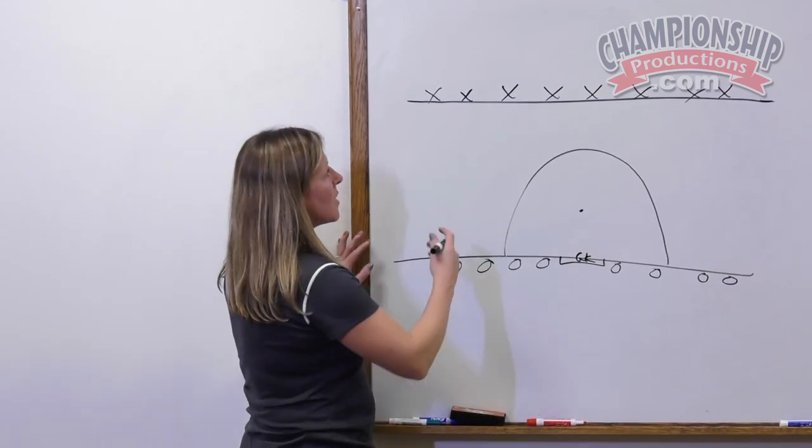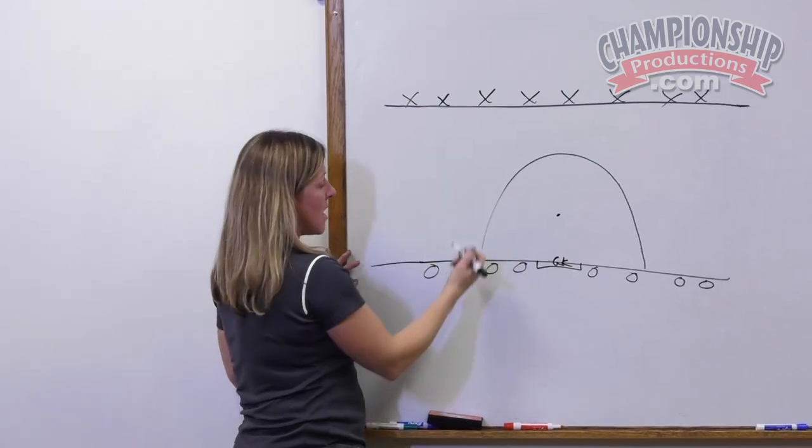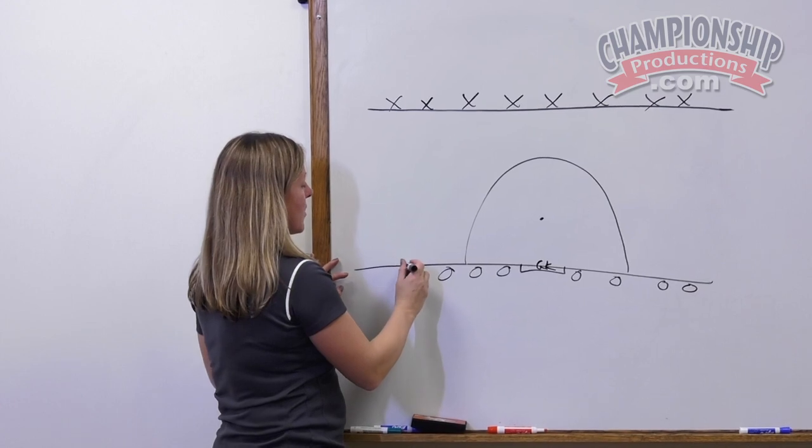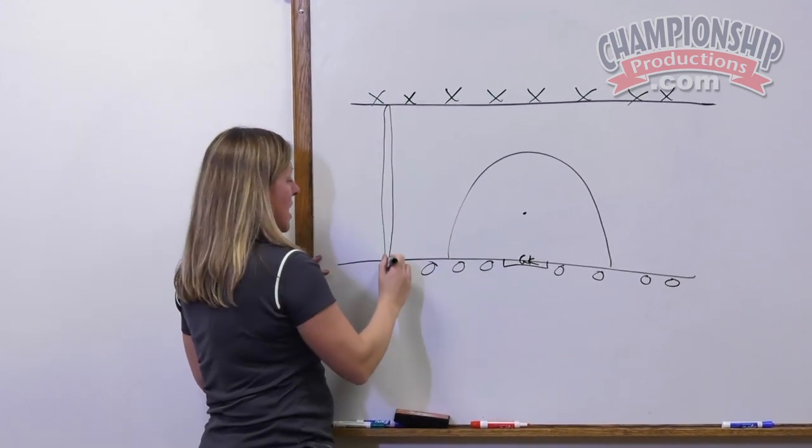The offensive players will start here in the X. The defensive players will start here as O's. And on my whistle, they're running up, touching the line, and running all the way back.